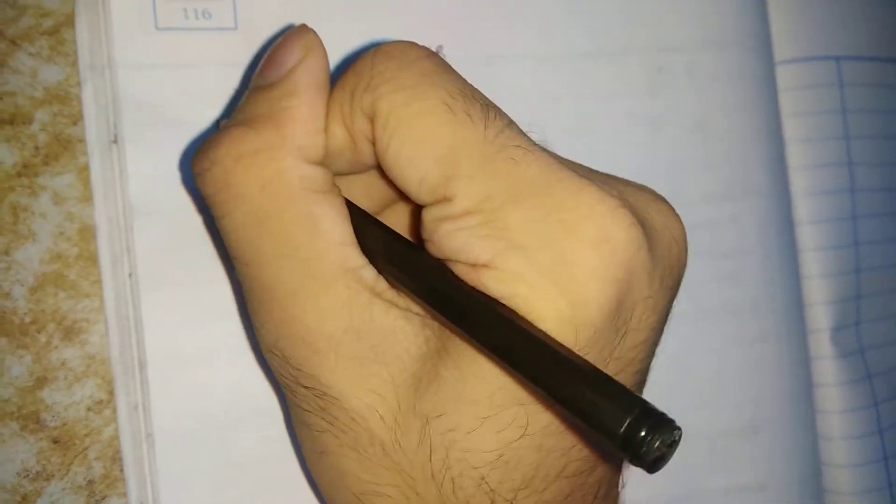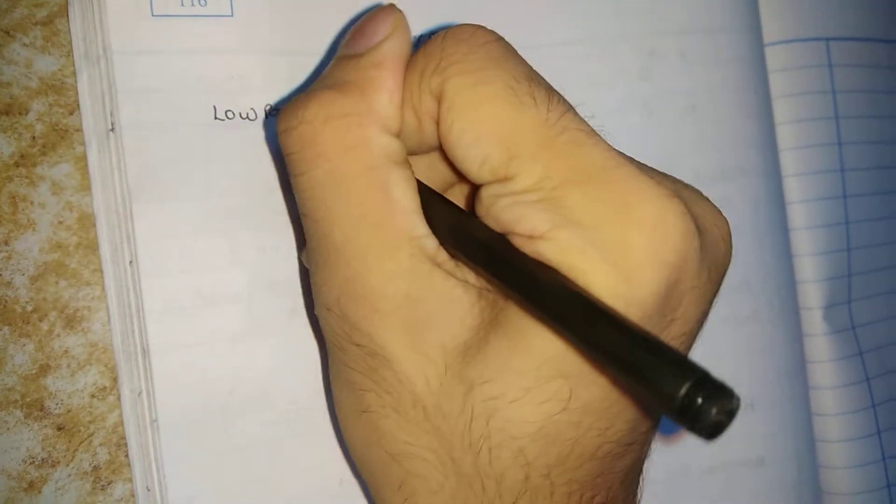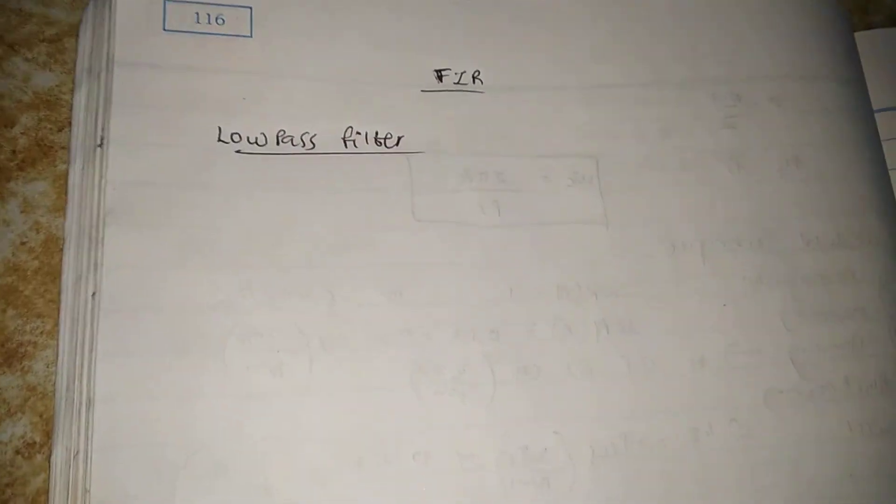There are 4 types of filters for FIR. The first filter is the low pass filter. We are going to discuss how to remember the equation for the low pass filter.